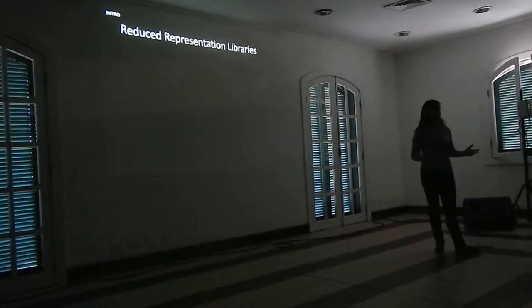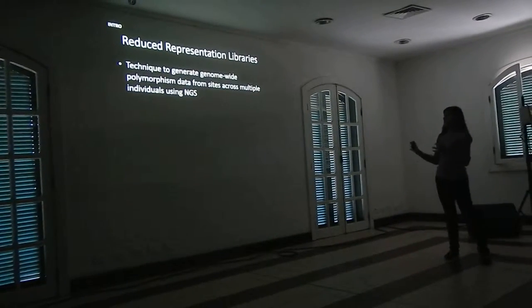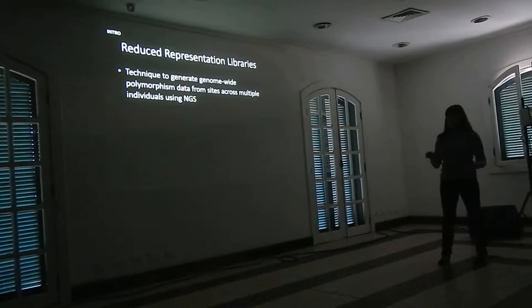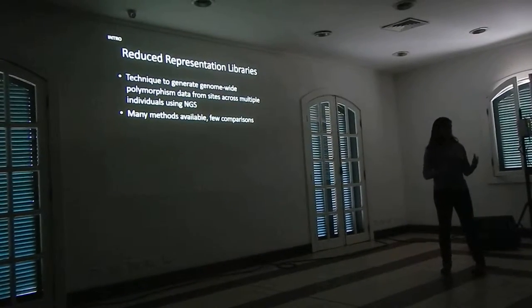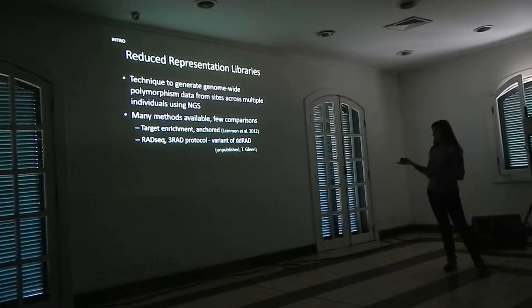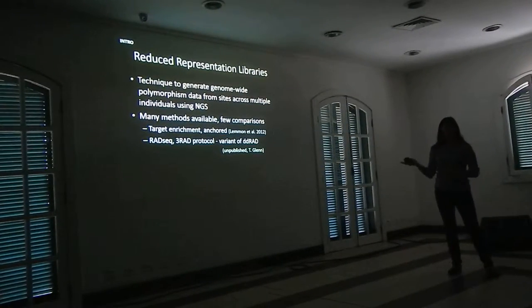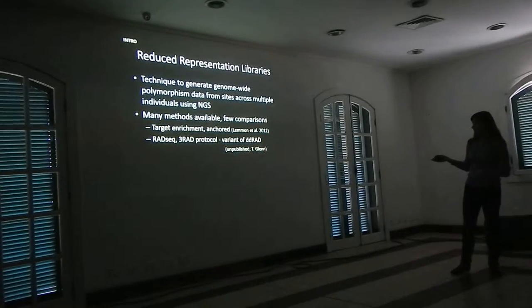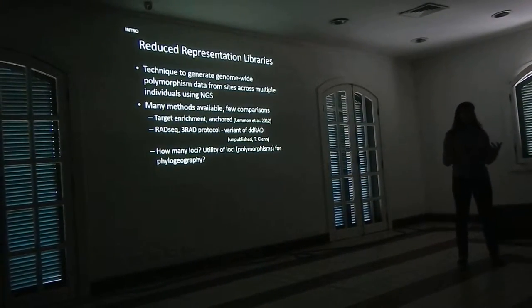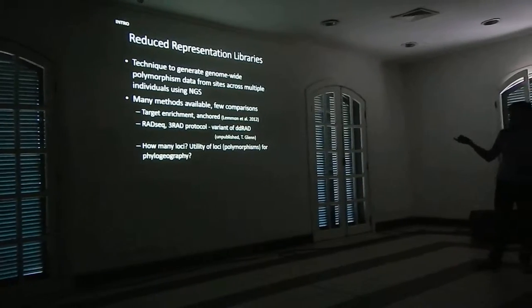To address the second question, I'm using reduced representation libraries, which generate genome-wide polymorphism data from sites across many individuals using next-generation sequencing. There are lots of methods now available with few comparisons, so I'm proposing to use both a target enrichment approach — specifically anchored phylogenomics — and a RAD-seq restriction enzyme digestion approach, specifically the 3RAD protocol. That's a variant of dual-digest RAD, an unpublished protocol by Travis Glenn. Questions here include how many loci and how useful these loci are for understanding differences in a phylogeographic context.